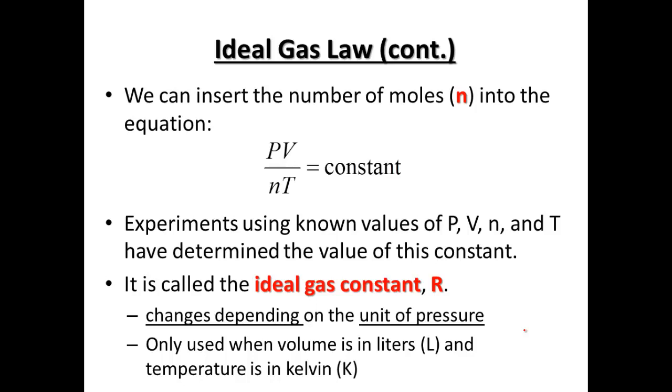So we are going to be able to insert N, being the number of moles. So the number of moles is N into the equation. So pressure, volume, and temperature, what we've done now is inserted N, and it's going to remain constant. So using our experiments using known values of pressure, volume, N, and then T, so number of moles, and then temperature, have determined a constant value. And we call this the ideal gas constant. And it's going to be symbolized by the letter R.